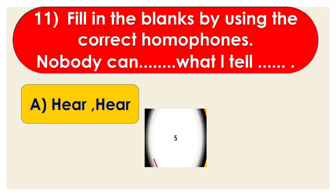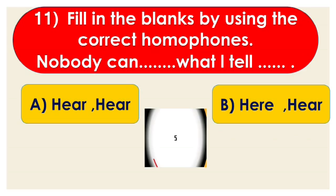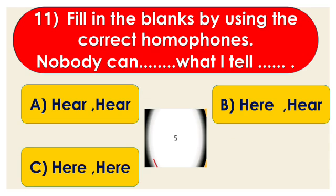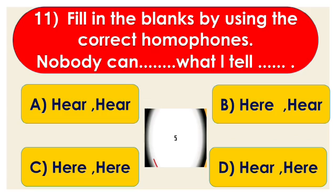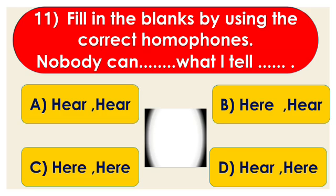The options are A. 'hear' and 'here', B. 'here' and 'hear', C. 'here' and 'here', D. 'hear' and 'here'. The correct answer is option D. Nobody can 'hear' — meaning listen — what I tell 'here', meaning at a place. The spelling of 'hear' is H-E-A-R and 'here' is H-E-R-E.